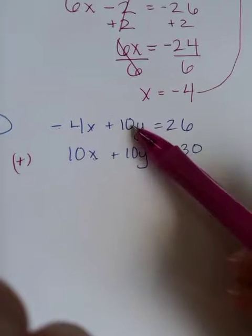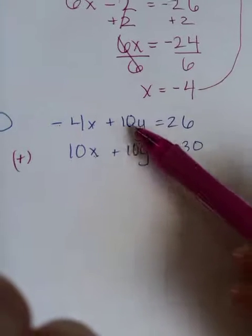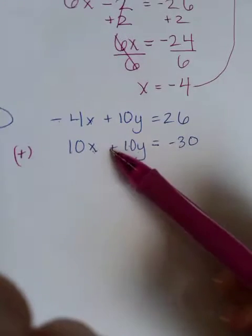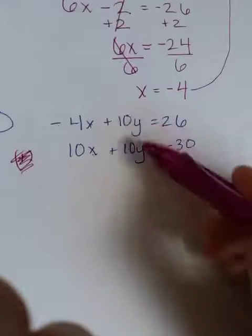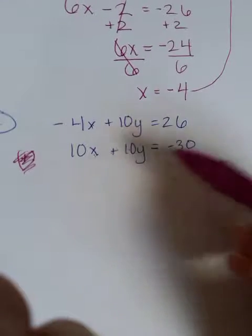So when I'm looking at this, I see 10 and 10, and I know if one of these were a negative, they would cancel out to 0. So before I'm adding them together, one of your terms has to cancel out.